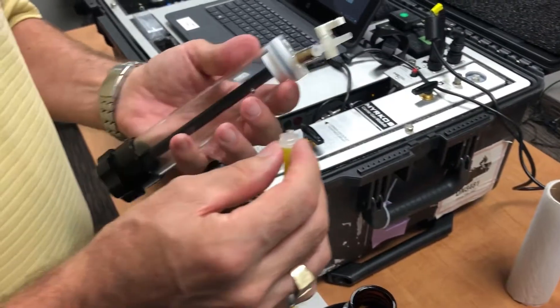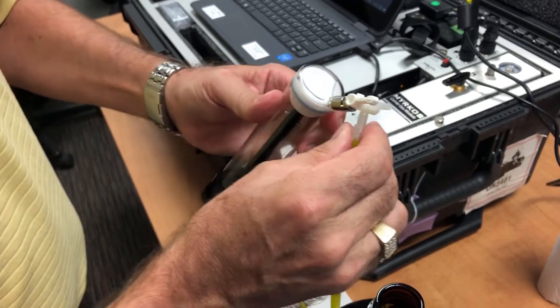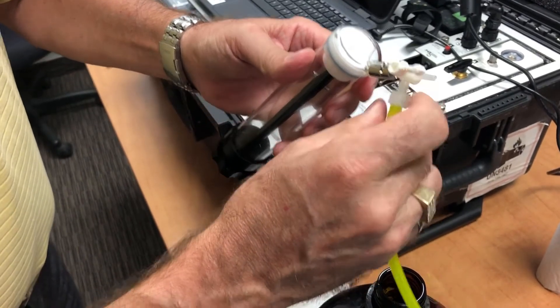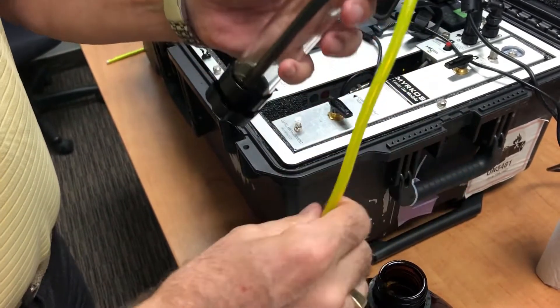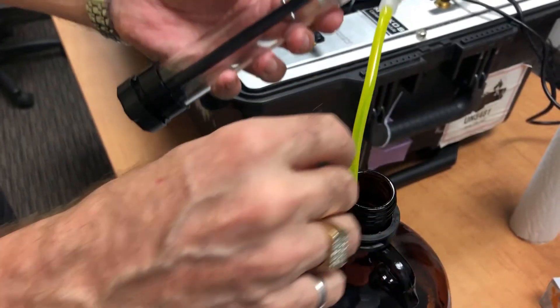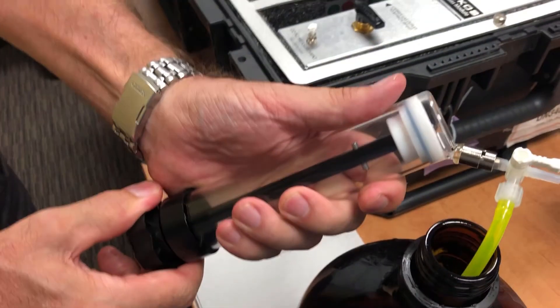For the oxygen-nitrogen test, it's the same thing that we did before for the 7-gas. So we're going to fill the syringe again, full of oil.